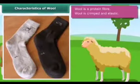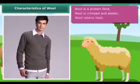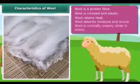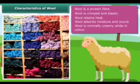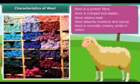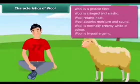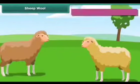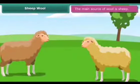Characteristics of wool: wool is a protein fiber. Wool is crimped and elastic — the crimp makes wool more bulky. Wool retains heat because it is hollow. It absorbs moisture and sound. It is normally creamy white in color, but can also be brown, black, or silver in color. It is hypoallergenic, which means it causes fewer allergies in human beings.